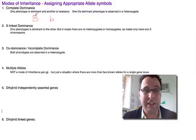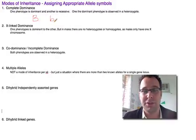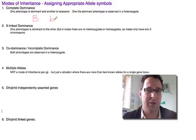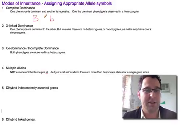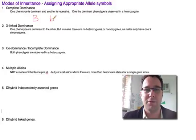Be aware that examiners might choose to give you symbols that aren't the conventional ones, just to make sure you understand the genetics and aren't just following patterns. But if you have to assign allele symbols for a question, use the conventional ones: a capital letter for the dominant trait and a lowercase letter for the recessive trait of the same letter.